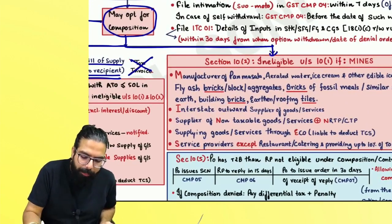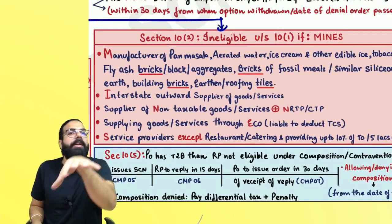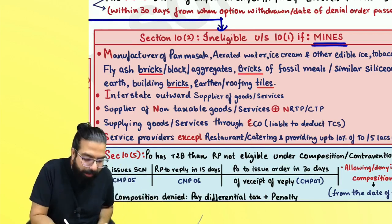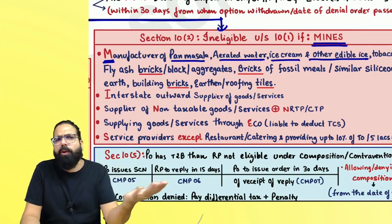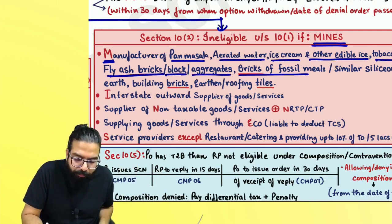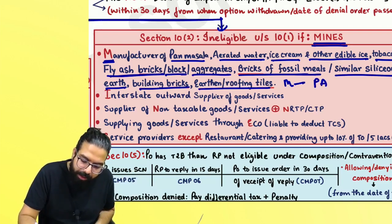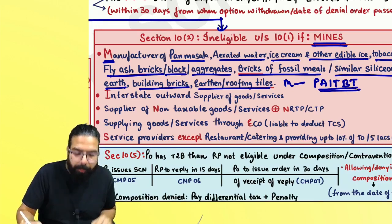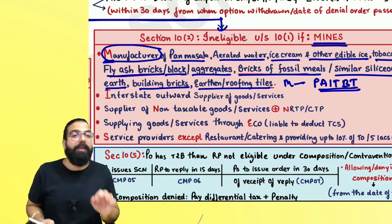Now, who are the people ineligible? Section 10(1) must be read with Section 10(2). Section 10(2) says who will be ineligible. The ineligible people can be remembered with the acronym MINES: M for Manufacturer of notified goods — pan masala, aerated water, ice cream, tobacco, fly ash bricks, blocks or aggregate, bricks of fossil meal or siliceous earth, building bricks, earthen or roofing tiles. Remember: we are talking about manufacturers here — if you are a trader of these goods, you are still eligible.